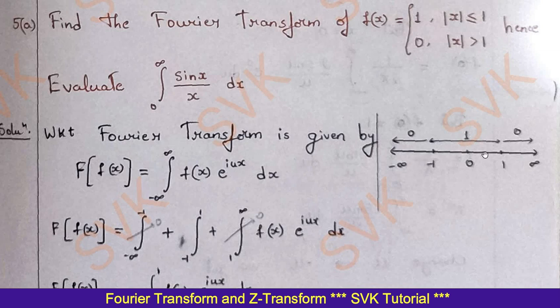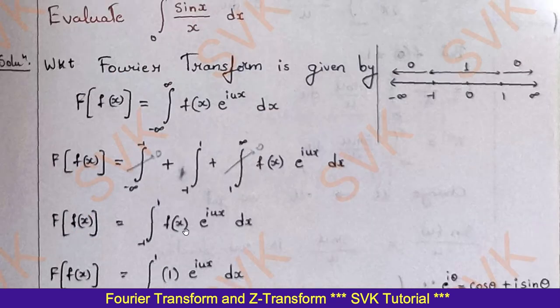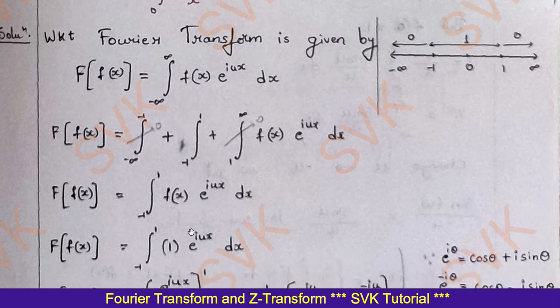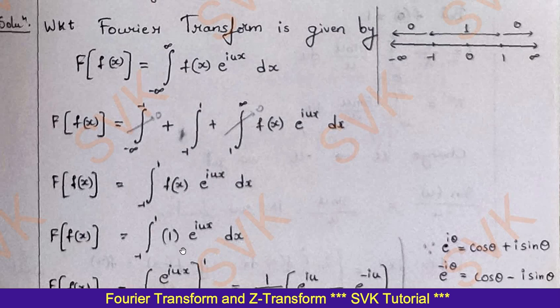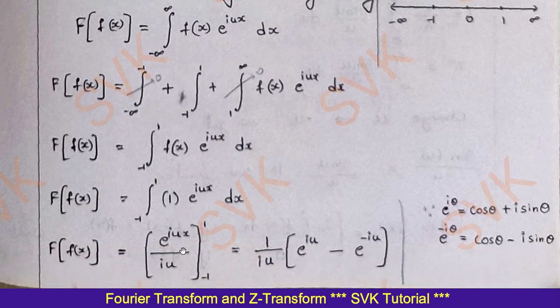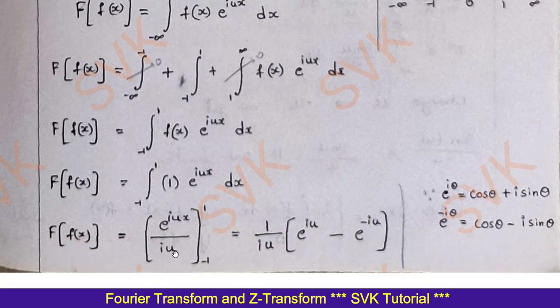As the interval has been split, from minus 1 to 1 f(x) equals 1, and the rest of the values are 0. So we are left with the integral from minus 1 to 1 of f(x) e^(iux) dx. In that interval f(x) is defined as 1. Substitute that value 1, and integrate: the integral of e^(iux) is e^(iux) divided by iu. Then substitute the limits for x.